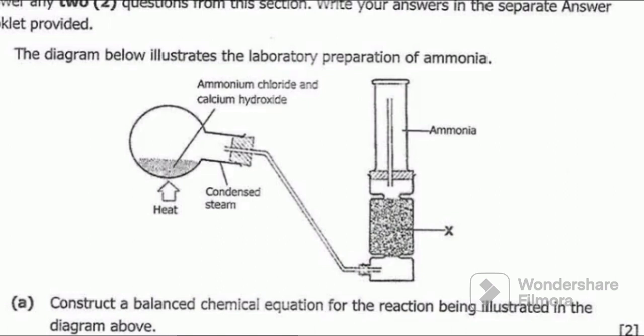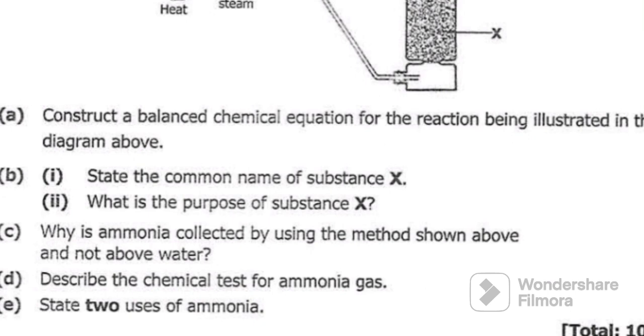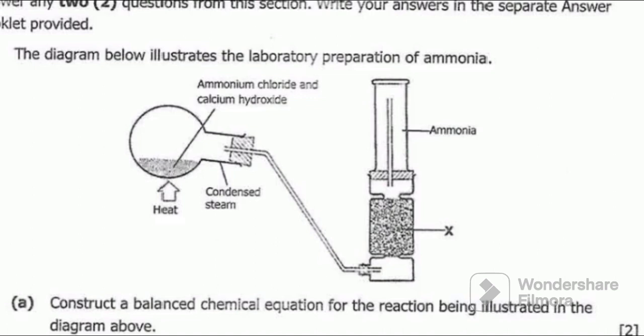Question D: describe the chemical test for ammonia gas. To test for ammonia, you introduce a damp red litmus paper into the jar containing the gas. If the damp red litmus paper turns blue, the gas is ammonia.